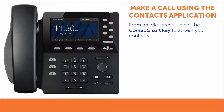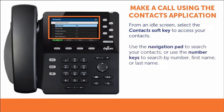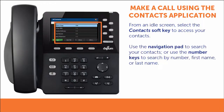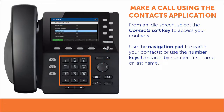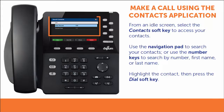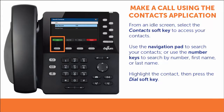From the phone's idle screen, select the contact soft key to access your contacts. Once you see all of your contacts, you can use the navigation pad to scroll, or you can use the number keys on the phone to search your contacts. When using the number keys to search, you can search either by phone number or by name using the letters on the keys. Once you find the contact you want to dial, highlight it and then press the dial soft key.